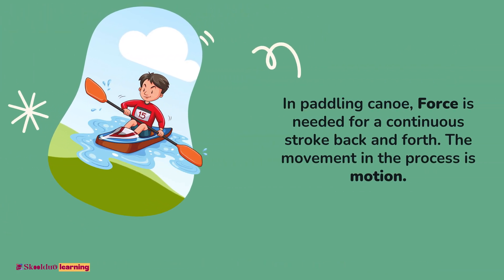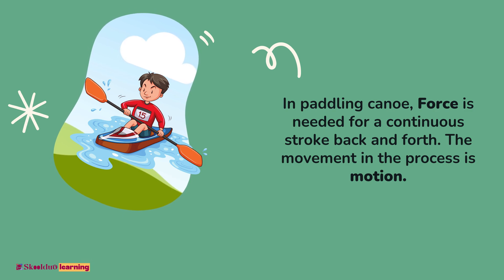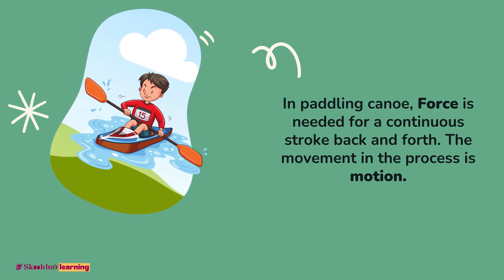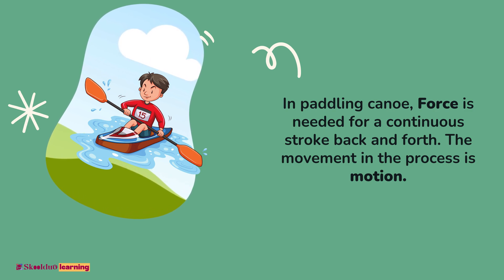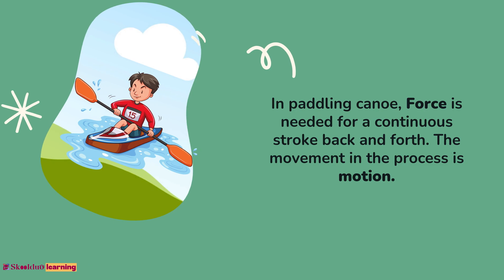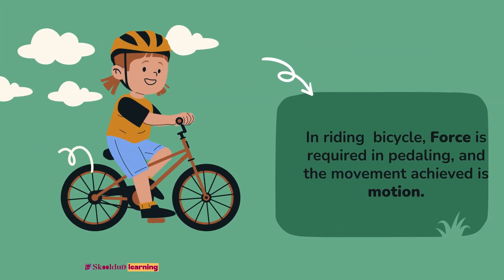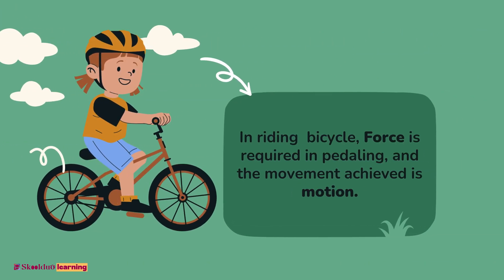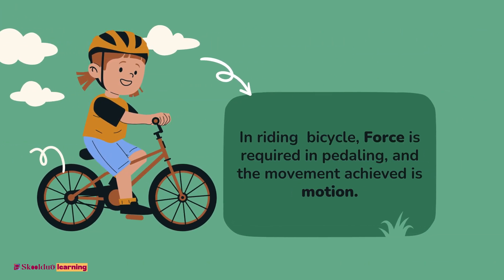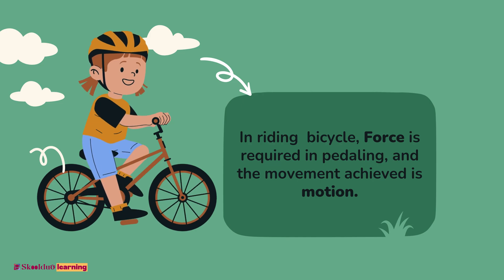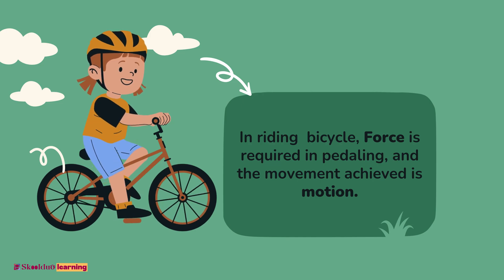In paddling a canoe, force is needed for a continuous stroke back and forth, and the movement in the process is motion. In riding a bicycle, force is required in pedaling, and the movement achieved is motion.